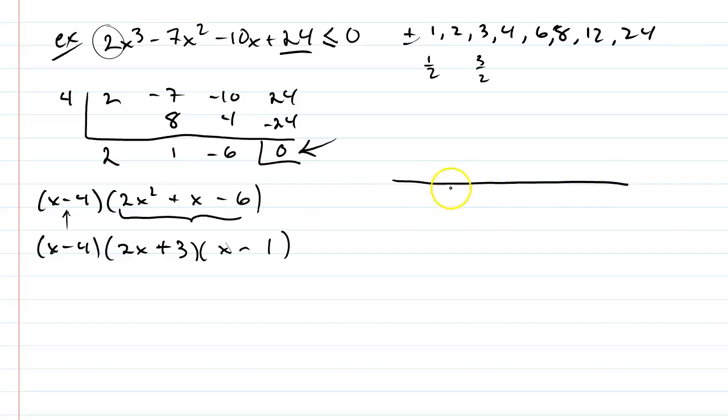We have our critical points from our factorization. We have 1. We have negative 3 halves. And, we have 4. Okay. So, we have 4 regions to look at. One of the easiest points to pick out is plugging in 0. And, that makes sense because that's the y-intercept. If I plug 0 in, I'm going to get 24. So, I know this region is positive. Alright. Another trick I know is that the end behavior is positive. So, on the right side, it's going to go up. And, it's going to snake through. And, on the left side, it's going down. So, I know that this has to be negative on this side. I know this has to be positive here.